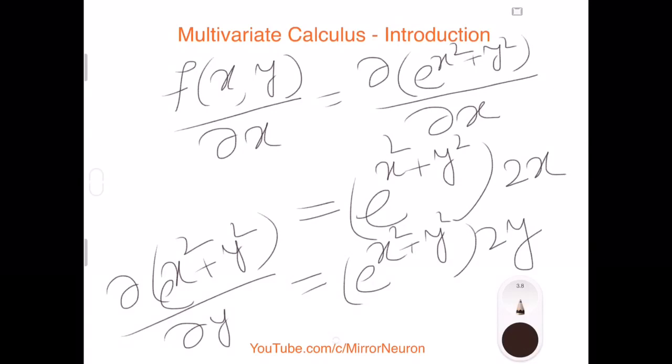But in case of multivariate calculus, we are dealing with multiple variables. And that's why we have to change each variable and see how they're influencing the overall output. And that is the main intention behind multivariate calculus.